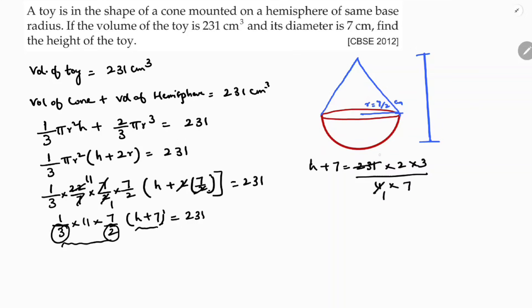11 times 1, 11 times 2, 7 times 1, 7 times 3. Next step: h plus 7 equals 6 times 3 equals 18. So height of the cone is 18 minus 7, which is 11 centimeters. But the question asks for the height of the toy, not just the cone.